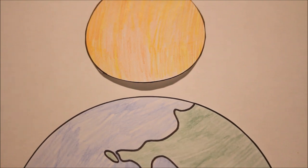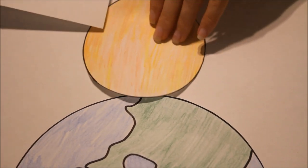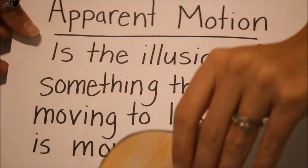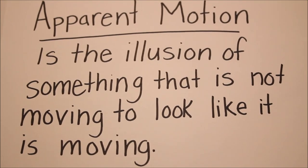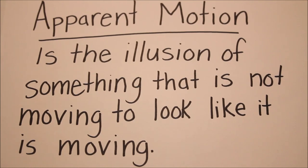That motion of the sun moving across the sky is called apparent motion. Are you taking notes? You might want to write this down. It's kind of important. Apparent motion is the illusion of something not moving to look like it is moving.